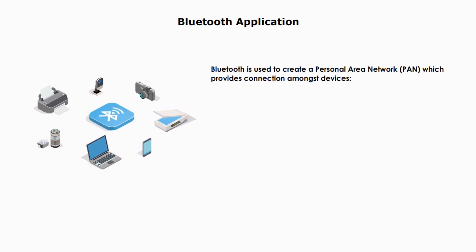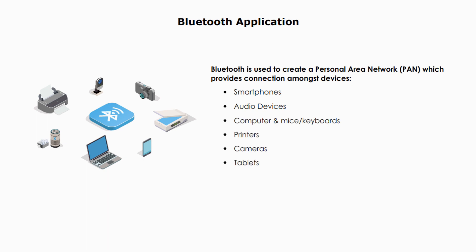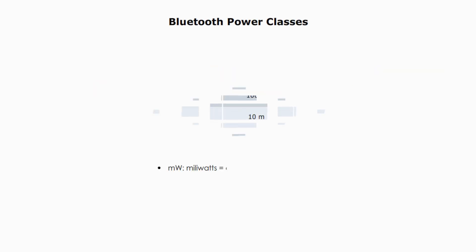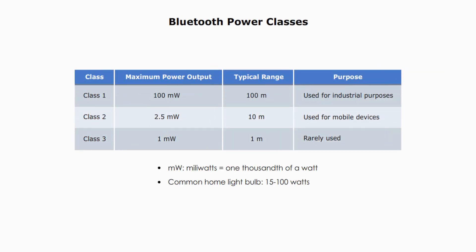Bluetooth is used to create a personal area network, or PAN, which provides a connection among devices such as smartphones, audio devices, computers and mice, keyboards, printers, cameras, tablets, and PDAs. There are three classes of Bluetooth in terms of power output, range, and uses.